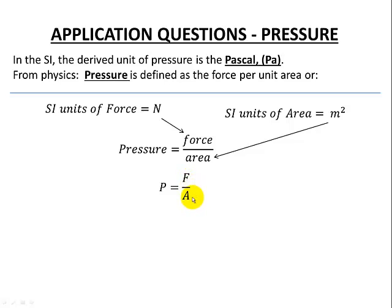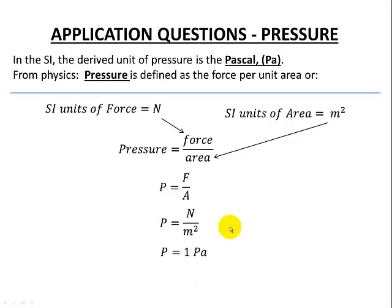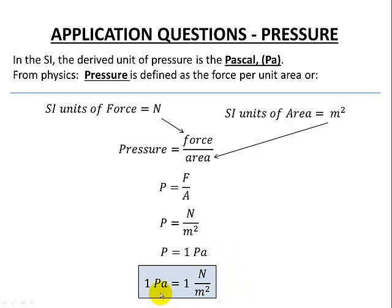Notice how it's not lowercase 'a' — lowercase a is reserved for acceleration. Capital A is for area. So our units of pressure will be newtons per meter squared, and we'd like a shorthand notation: we'll call that a Pascal. On our table of equivalences, one Pascal equals one newton per meter squared.